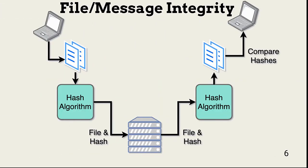When using a hash value to ensure file integrity, the user runs the document through a hash algorithm. The hash value and the file are either stored together or separately. When the same person or another user opens the saved document, they run the document through the same hash algorithm. If the hash value matches the saved hash value, the document has not been changed.